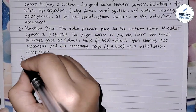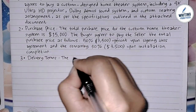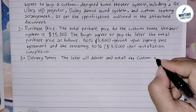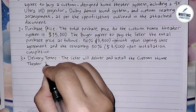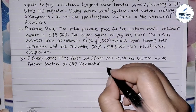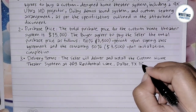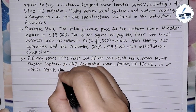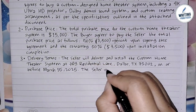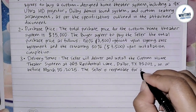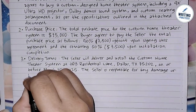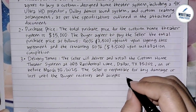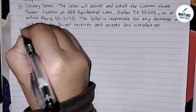Point number three is delivery terms. Write the details of when and where the product or service will be delivered or installed, and include who bears responsibility until the buyer has accepted the product. For example: '3. Delivery Terms: The seller will deliver and install the custom home theater system at 789 Residential Lane, Dallas, Texas 75202, on or before March 15, 2025. The seller is responsible for any damage or loss until the buyer receives and accepts the installation.'